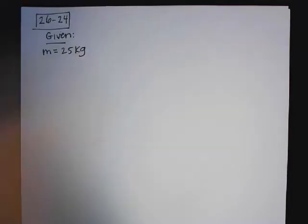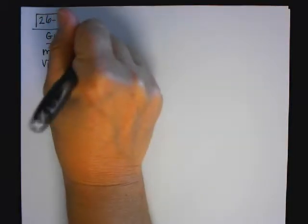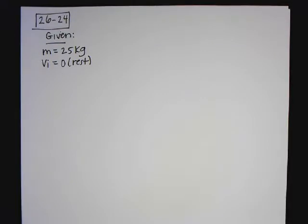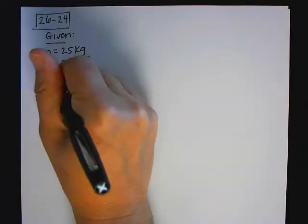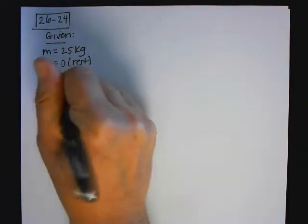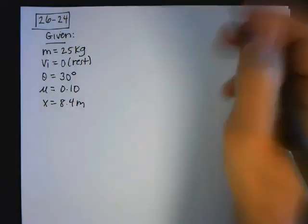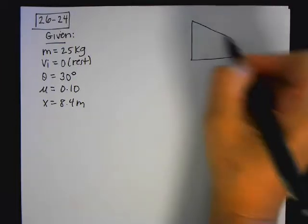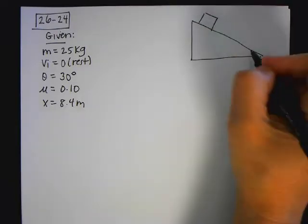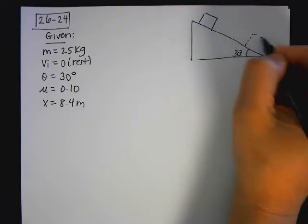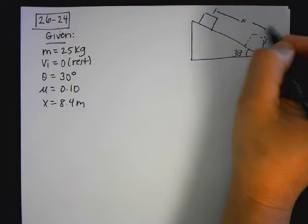It says a 25 kilogram mass, so the mass is 25. It starts from rest, so the initial velocity is zero. On a rough 30-degree incline — it's rough because there's going to be friction. The coefficient of friction is 0.1, and the mass slides 8.4 meters along the incline. So here's my mass sliding down this 30-degree incline, and x is how far it goes.